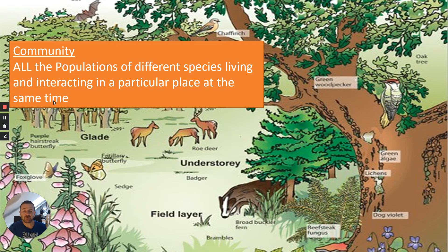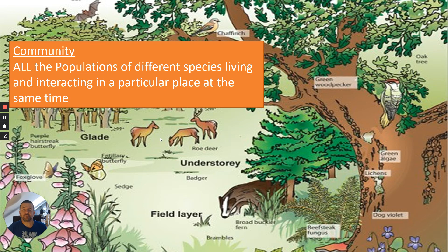Community. A community is all the populations of different species living and interacting in a particular place at the same time. In this case, you've got the roe deer, the fritillary butterfly, the badger, and the green woodpecker — lots of different populations of different species all in the same place at the same time.